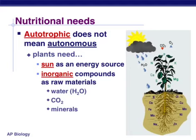Plants are autotrophic, but they're not autonomous. Autonomous means you don't need to put anything in — you just keep making everything without any raw material input, like a machine or a robot. But autotrophic means that once you have everything you need, you can do it all by yourself. Plants still have some needs: an energy source and inorganic compounds or molecules to act as raw materials.